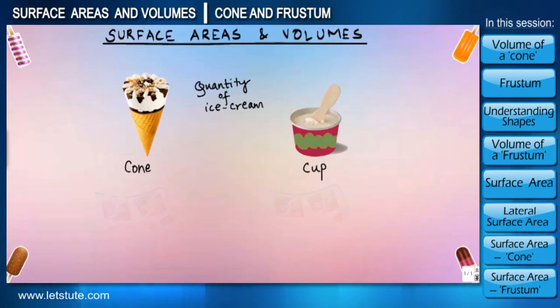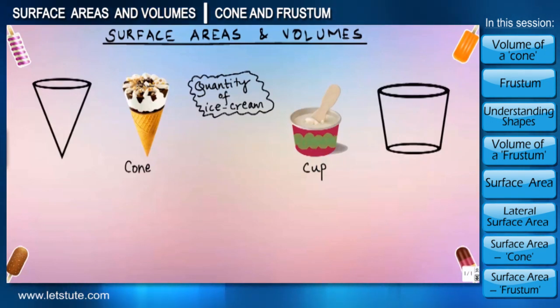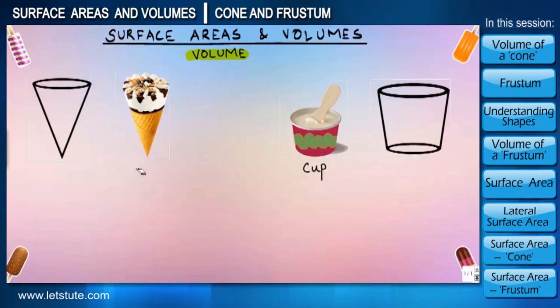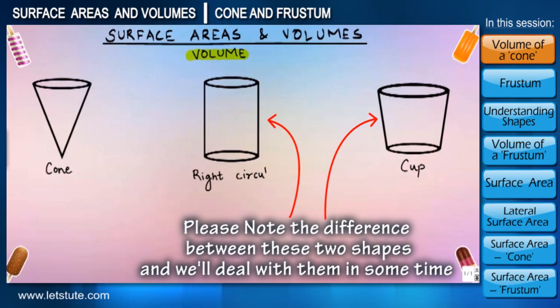Okay, so let us take them one by one. Friends, here we are talking about the quantity of ice cream that these two shapes can contain, which means we actually intend to find the volume of these two shapes itself. So to find the volume, let us think about another shape which is relatively similar to a cone, and what comes to my mind is a right circular cylinder.